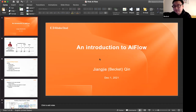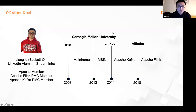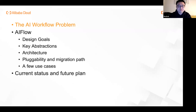My name is Beckett, and today I want to talk about a project called AI Flow. It's basically an event-based workflow that helps you put everything into a single workflow, including streaming jobs, which is not possible with current existing workflow projects. Today's agenda: first I'll talk about the AI workflow problem, then introduce AI Flow and how it addresses these problems, and finally give you the current status and future plans.